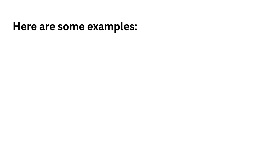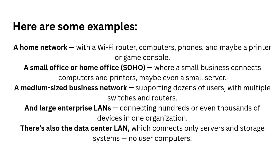For example: a home network where your phone, laptop, and TV connect to your Wi-Fi router; a small office that uses a single router and switch to connect all work computers; or a big company LAN with hundreds of computers and multiple switches for smooth performance. LANs are fast, private, and perfect for local communications.